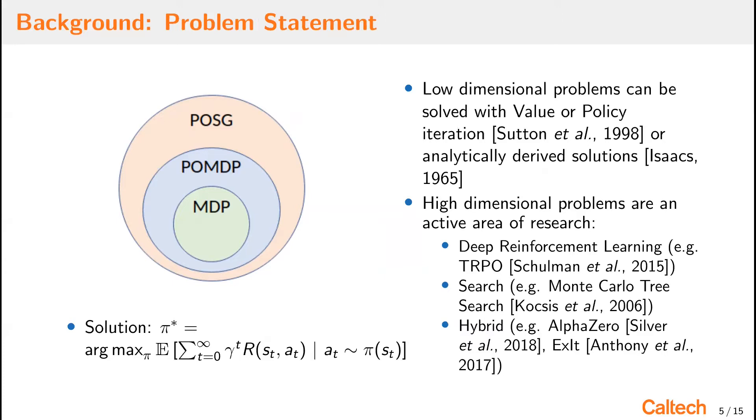Low-dimensional problems can be solved with value or policy iteration or with analytically derived solutions. However, high-dimensional problems are an active area of research. The deep reinforcement learning community might propose something like trust region policy optimization, the search community might propose Monte Carlo Tree Search, and there also exist hybrid methods such as AlphaZero and Exit.